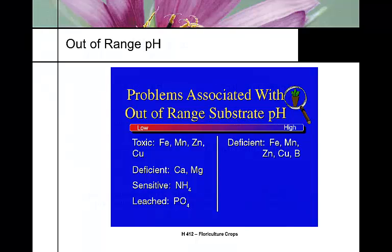When pH gets out of range for a particular crop, the consequences vary by direction. At low pH: iron, manganese, zinc, and copper become toxic; calcium and magnesium become deficient; there's more sensitivity to ammonium; and phosphates are leached. At high pH: iron, manganese, zinc, copper, and boron become deficient. Cold soil creates these same deficiencies as well.